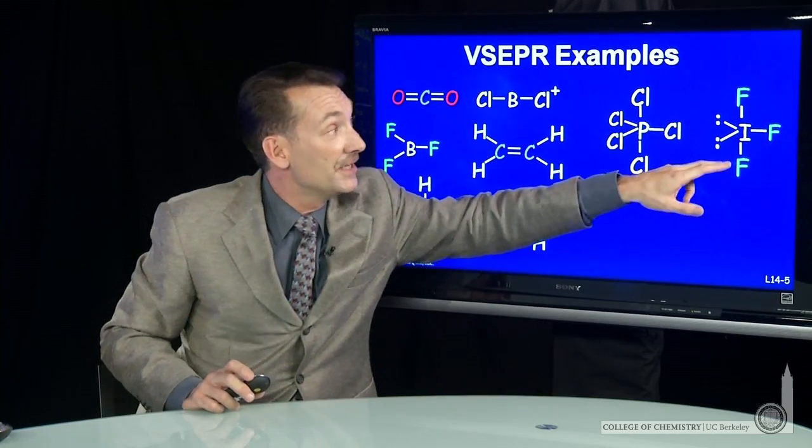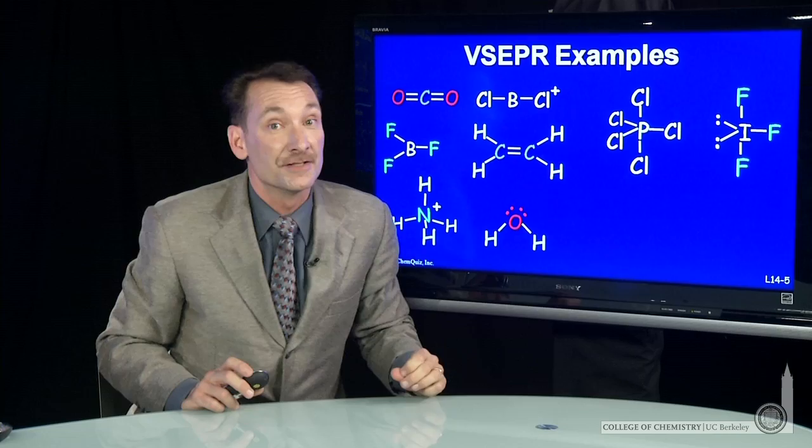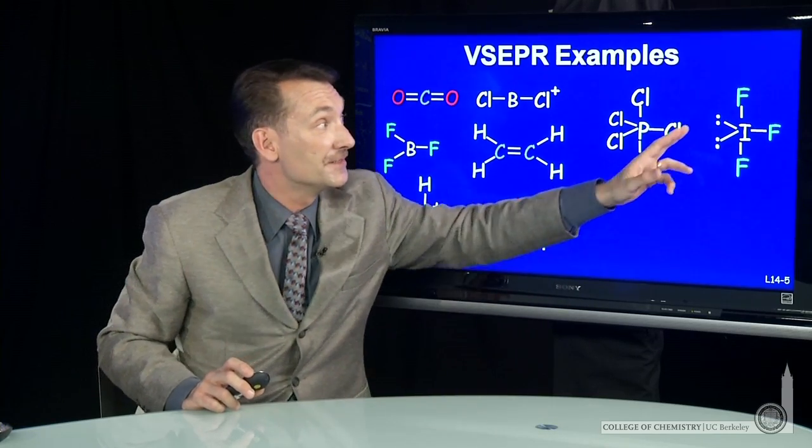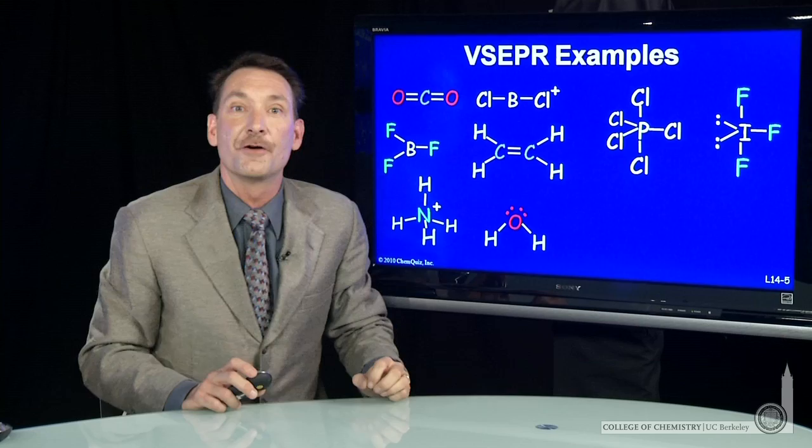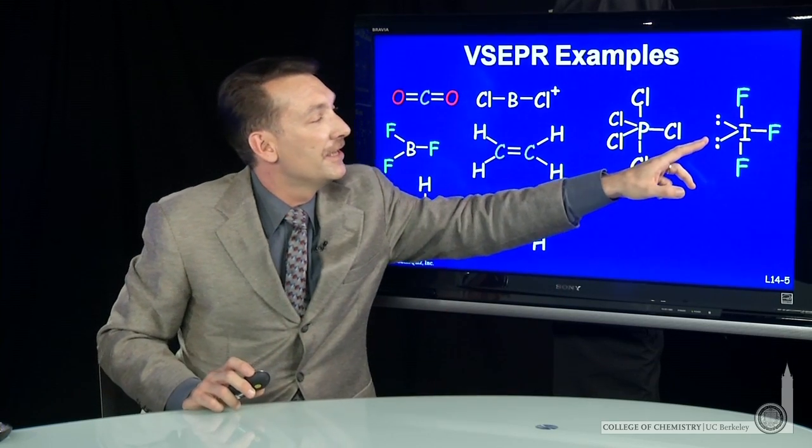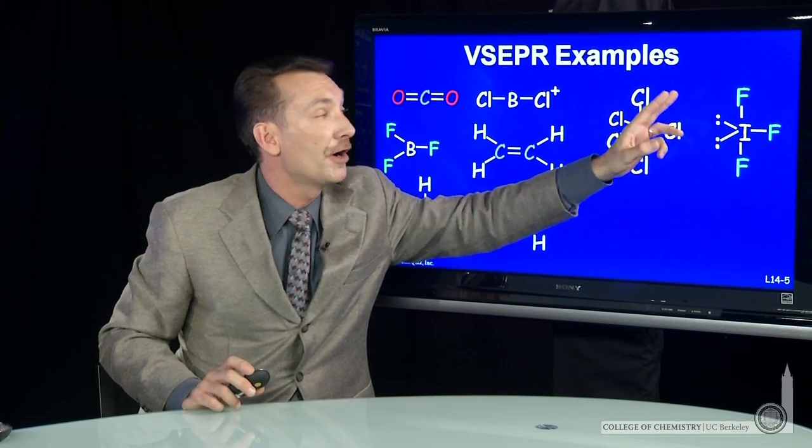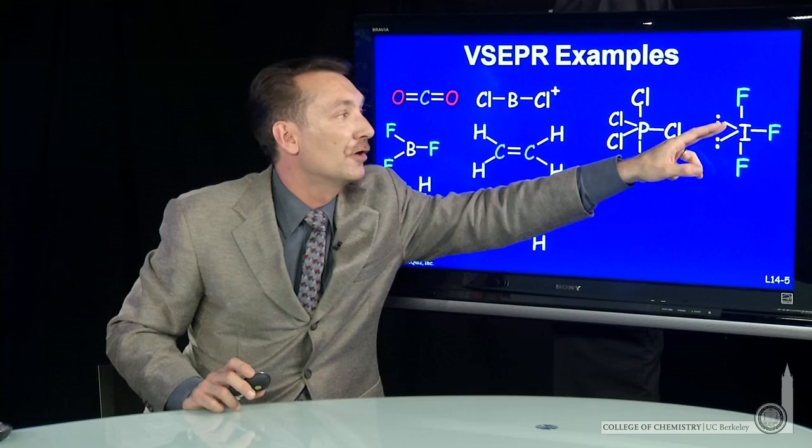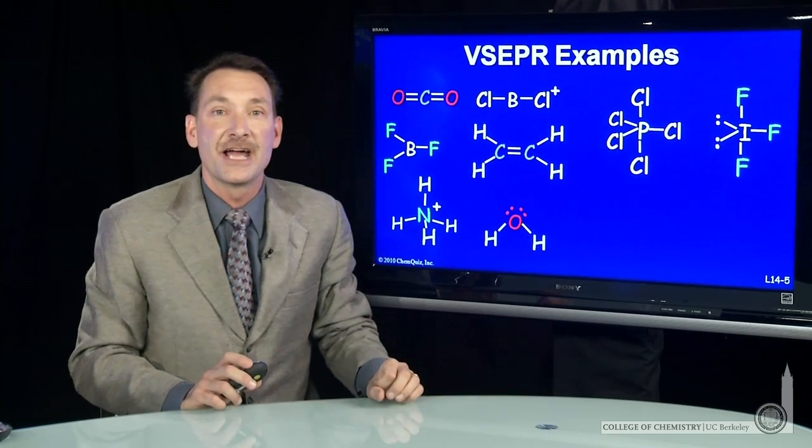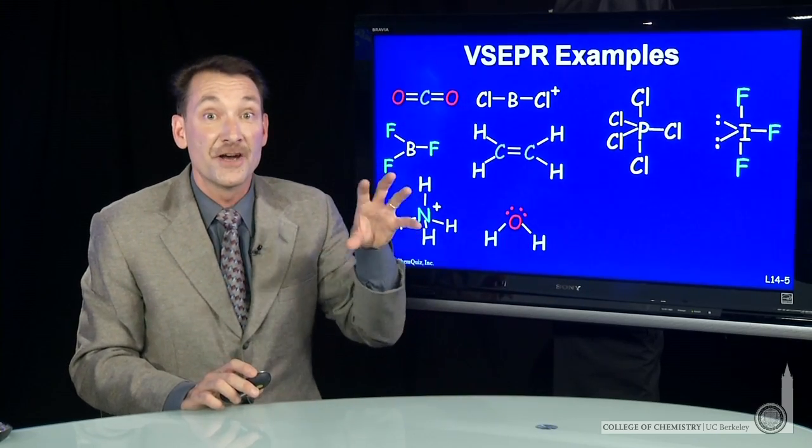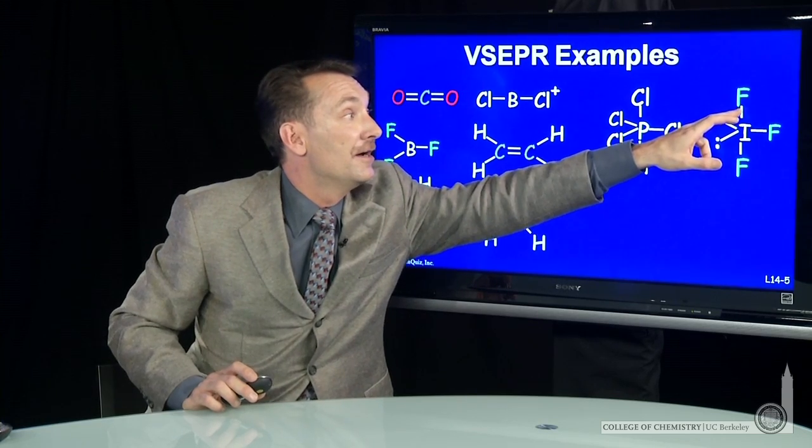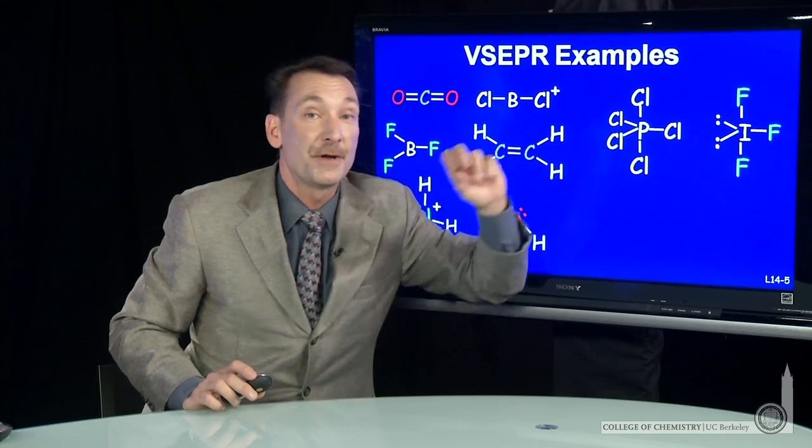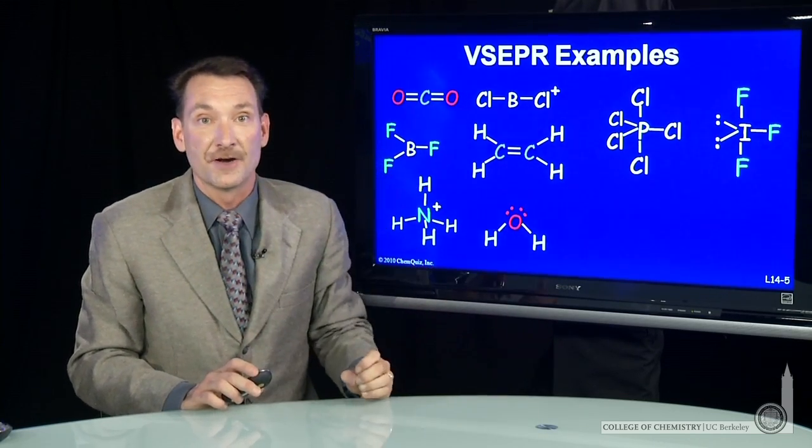Well, if I do put them in the axial positions, what I end up with is a lone pair here, a lone pair here, and three fluorines around the equator. But that gives me many more 90 degree lone pair bond pair interactions, and those are very sterically bad.